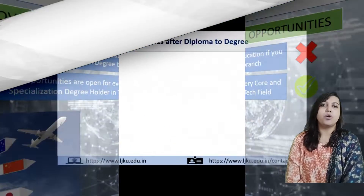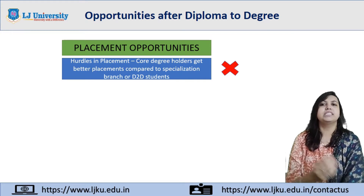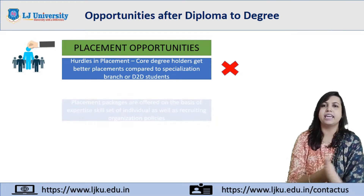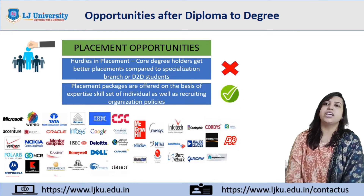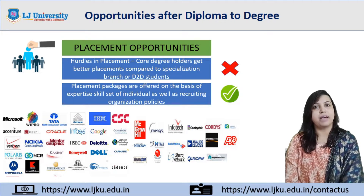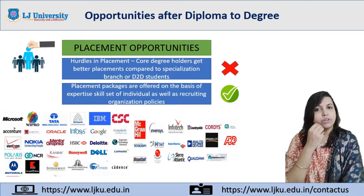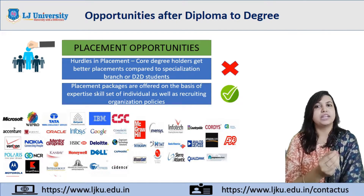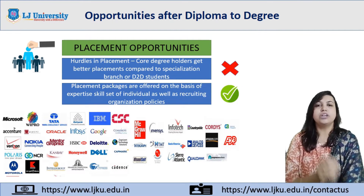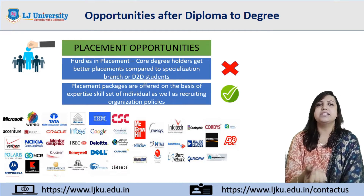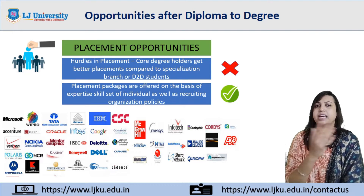Similarly, students from both streams have the same opportunities. Companies like TCS, Wipro, Amazon, Google, Microsoft and many more hire candidates whether you have done a core or specialization engineering degree. A specialization branch degree is at par with a conventional Computer Engineering degree, whether you have done Artificial Intelligence and Machine Learning, Computer Science and Design, Robotics and AI, or Cyber Security.